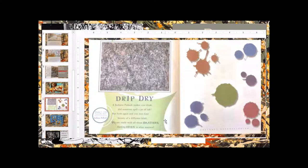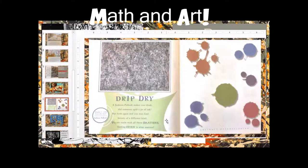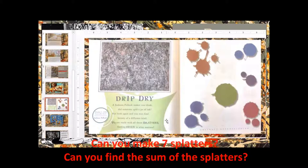Drip dry. A Jackson Pollock makes you think, did someone spill a jar of ink? But look again and you might find beauty of a different kind. Lines are made with all these splatters. Finding seven is what matters. So can you look at these splatters and maybe use a little bit of math and make up seven? Let's see if you can count out and circle seven splatters.